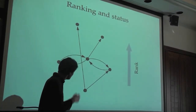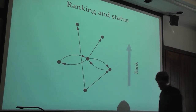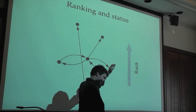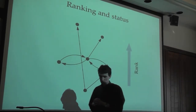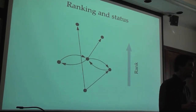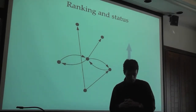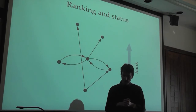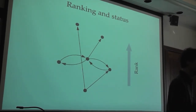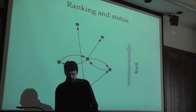Another example is rank structure, which is the first topic I wanted to talk about. This is something I've been working on recently with Brian Ball. In this example, we have a network that breaks down into some sort of hierarchy — some nodes are higher up and some are lower down. The place where we first encountered this was in looking at social networks of school kids.